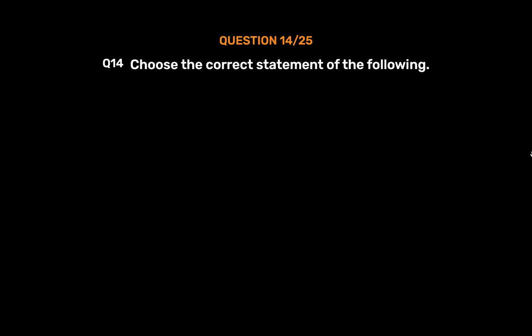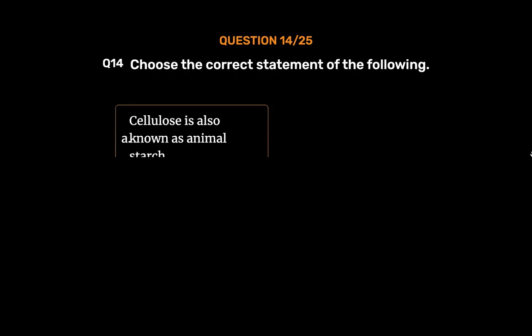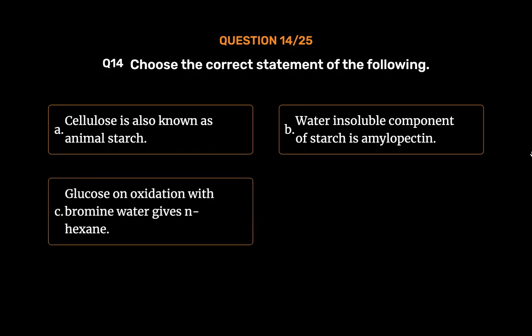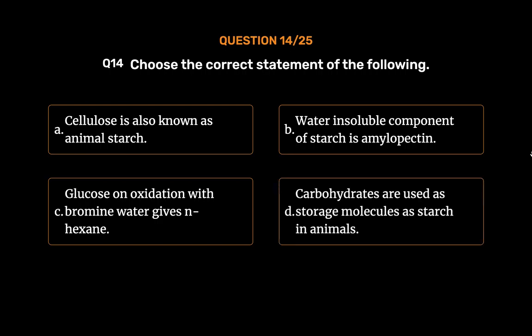Question number 14. Choose the correct statement of the following. Option A, cellulose is also known as animal starch; Option B, the water-insoluble component of starch is amylopectin; Option C, glucose on oxidation with bromine water gives n-hexane; Option D, carbohydrates are used as storage molecules as starch in animals. The correct answer is Option B: the water-insoluble component of starch is amylopectin.